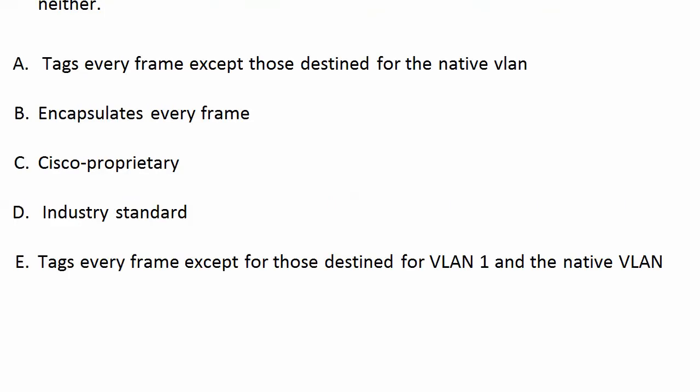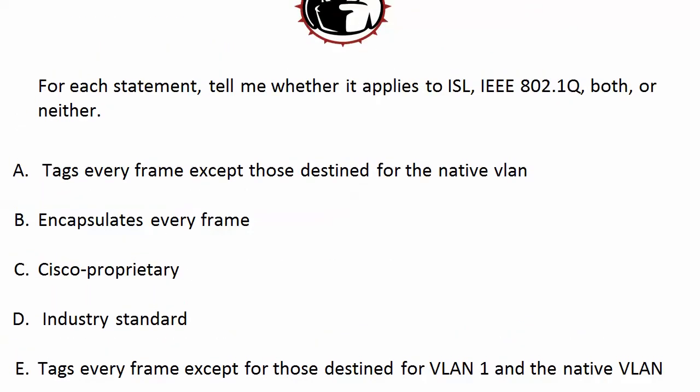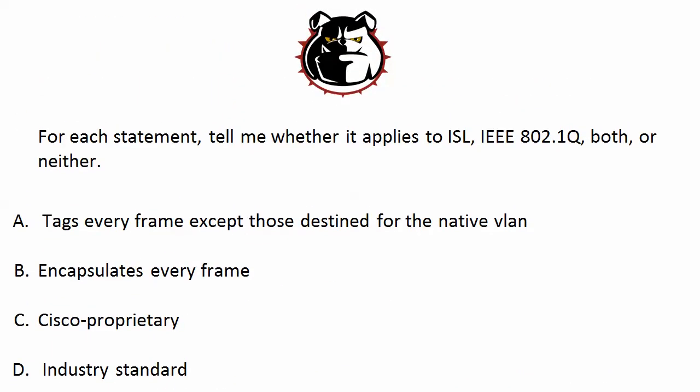For each of these statements, does it apply to ISL, .1Q, both, or neither — we're talking about our trunking protocols. Statement A — tags every frame except those destined for the native VLAN — that's .1Q. This is one reason you see so much .1Q today and not so much ISL. Statement B — encapsulates every frame — is true of ISL.